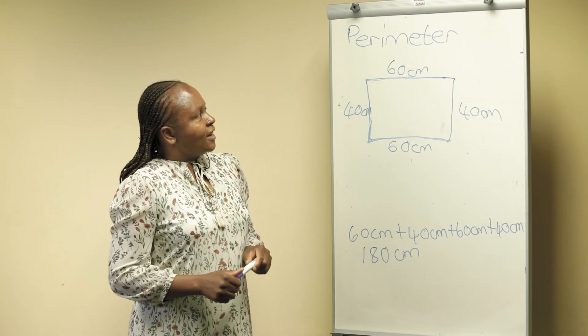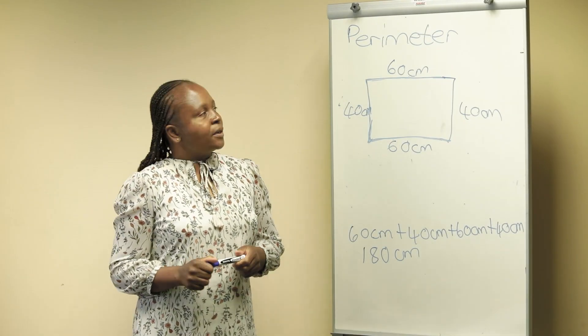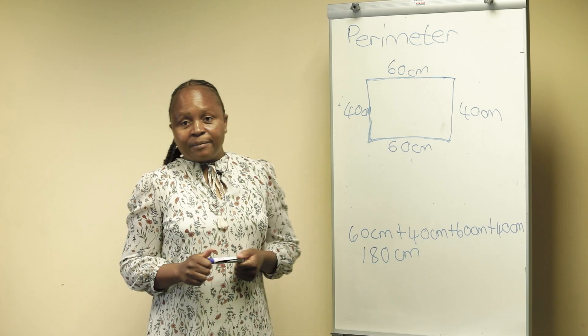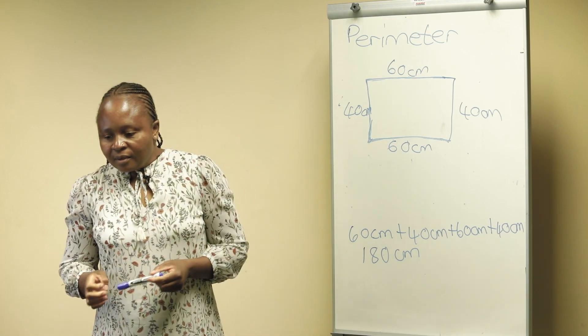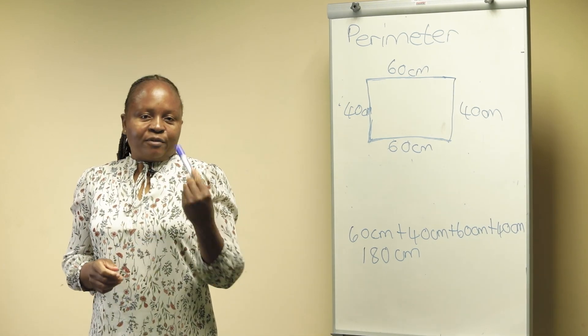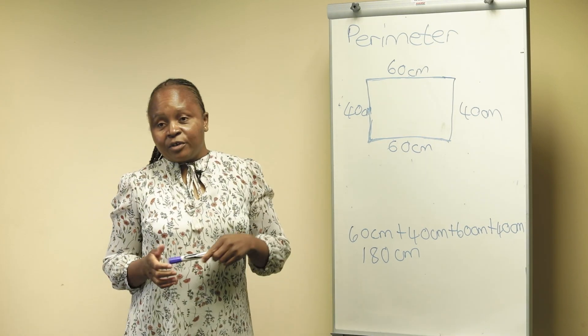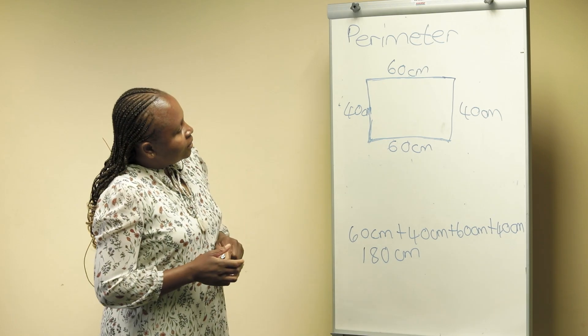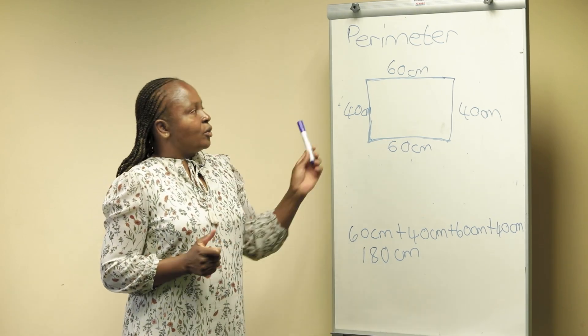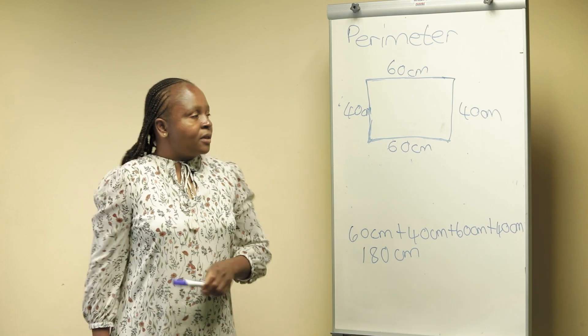Good day Grade 6 learners. Our topic today is perimeter. As we have learned in previous grades, perimeter is adding right round the shape. You can either count the blocks or you can add right round the shape.